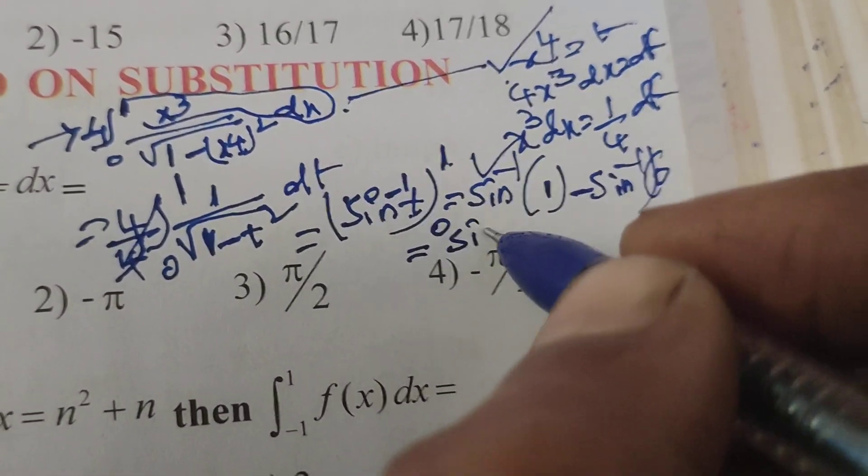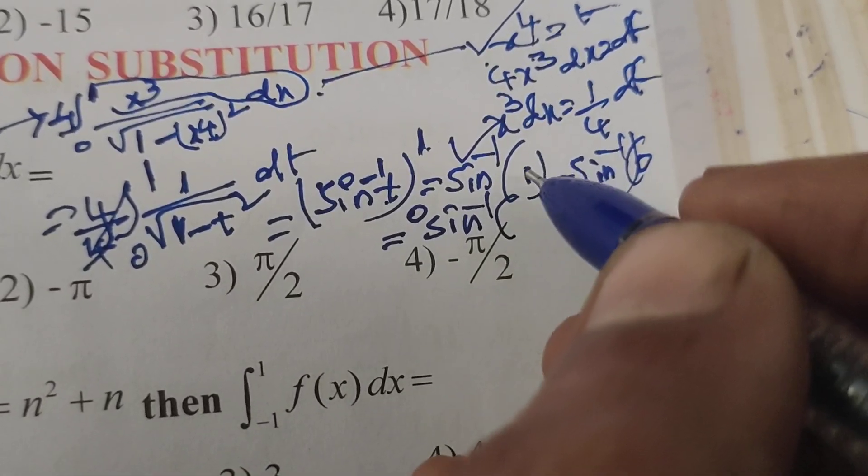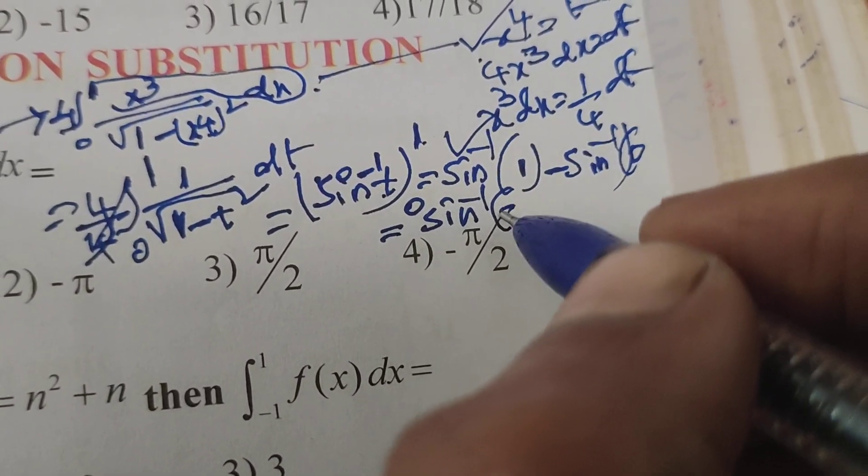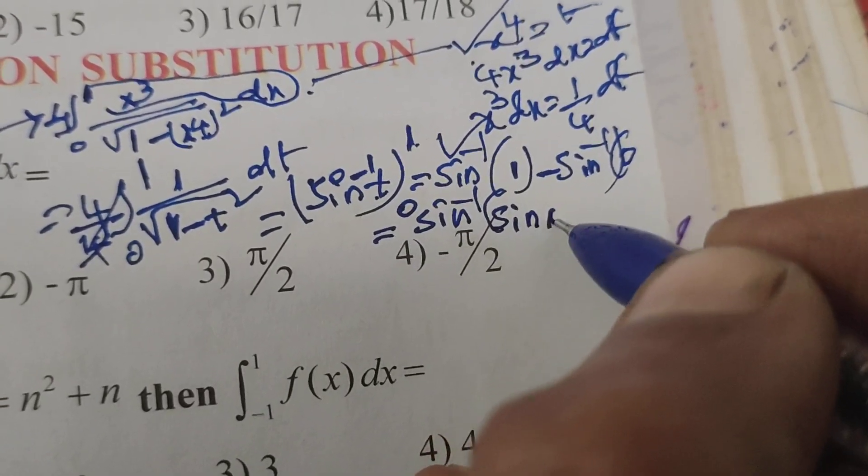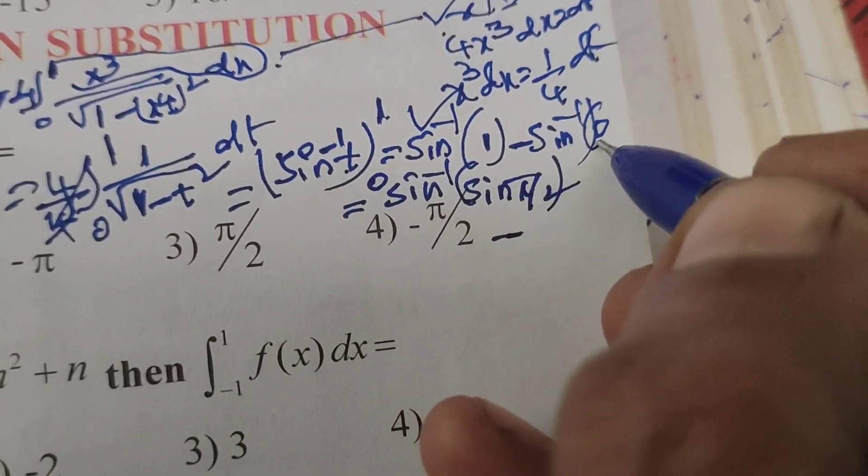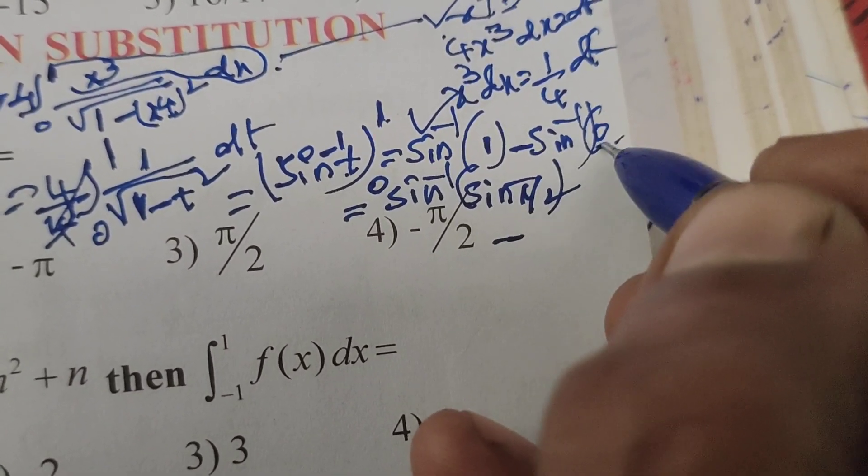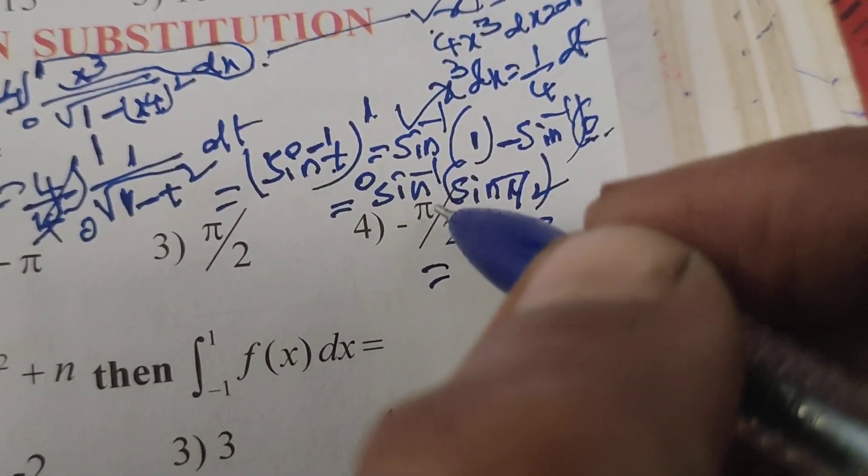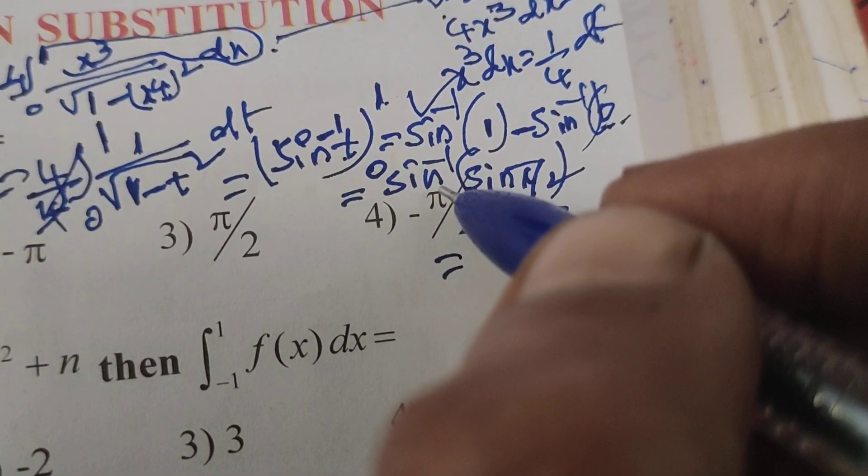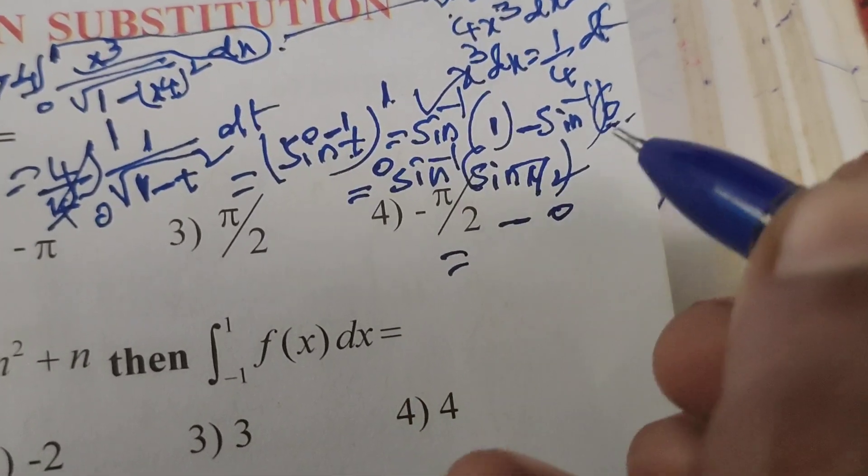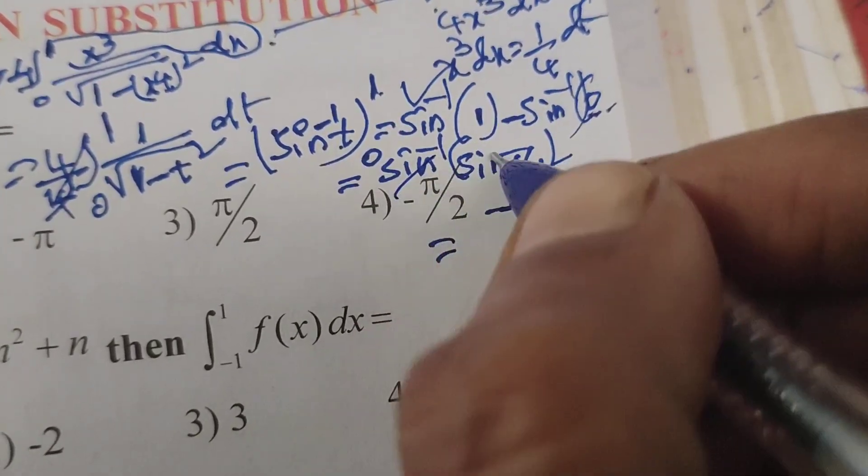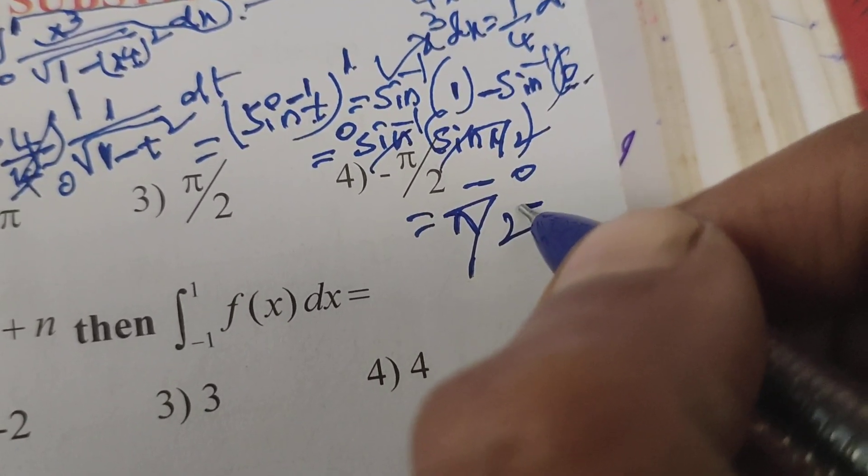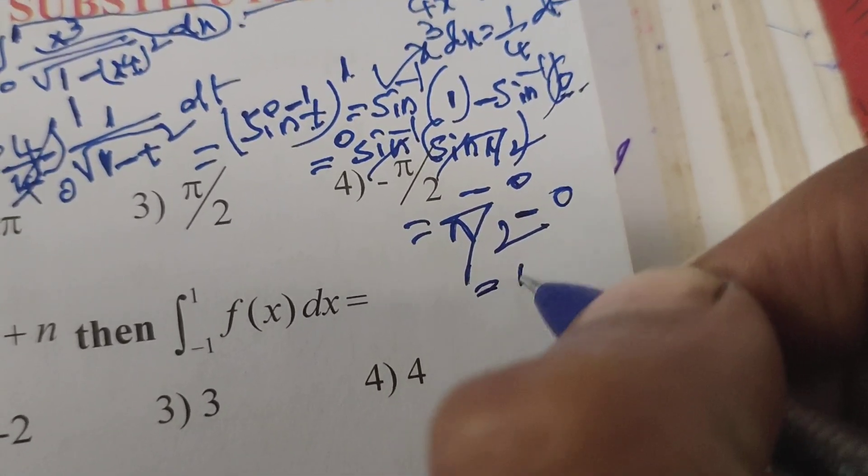Next, sin⁻¹ of, according to the trigonometric ratios, 1 will get sin 90°, that is sin π/2, minus here sin 0 is 0. So sin⁻¹ of sin 0 is 0. Therefore, inverse trigonometric formula: sin⁻¹ of sin x means x. In place of x, π/2 is there, therefore π/2 minus 0, that is π/2.